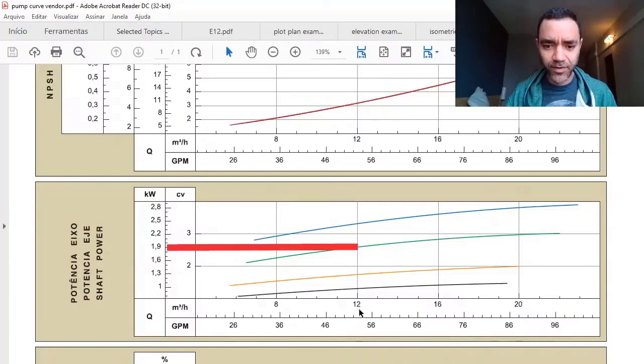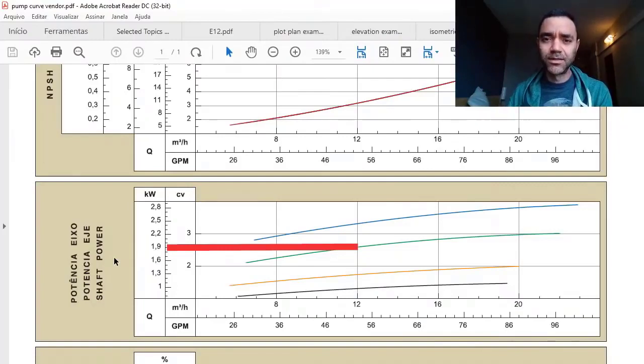You have the shaft power also related to the curve. If my pump runs at 12 cubic meters per hour using this pump, my shaft power is 1.9 kilowatts. The shaft power is not the motor size—the motor's nominal size needs to be higher or equal to the maximum shaft power of your system. When we're talking about big projects, we never use the same shaft power as the motor size when we need to comply with API or something like that; you have specific margins to be considered or complied with.